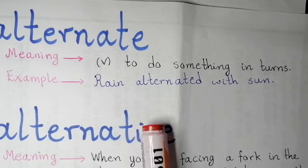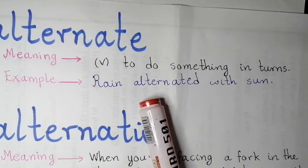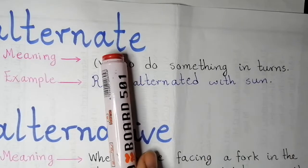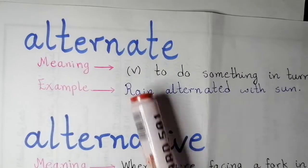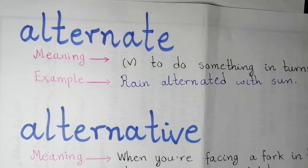Example: Rain alternated with sun. Alternate - to be done in turns is the meaning.